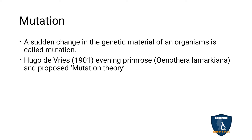The sudden change occurs in the chromosomes, that is the genetic material. The term mutation was coined by Hugo de Vries. Hugo de Vries was the first person to observe mutation in Oenothera lamarckiana, the evening primrose, and he proposed the mutation theory.